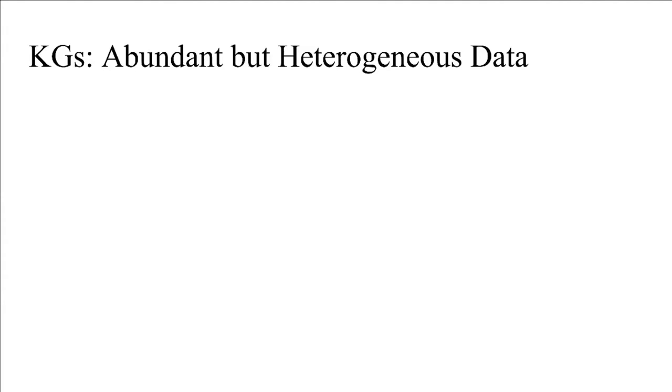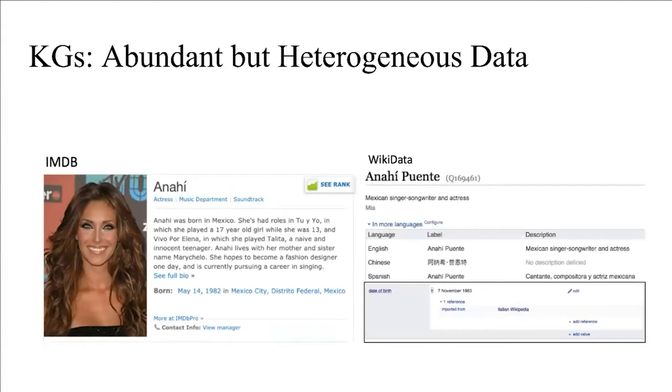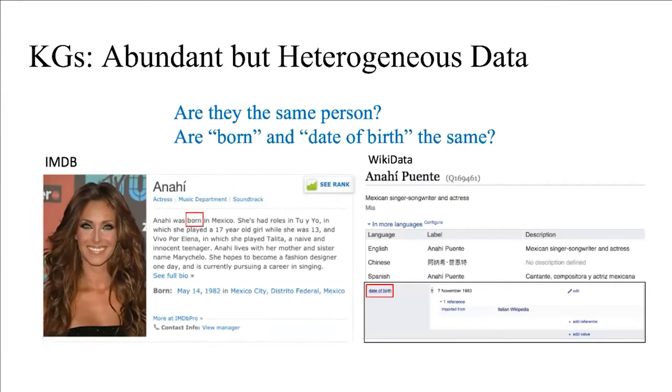Knowledge graphs contain abundant but heterogeneous data. In IMDB, the extract name is Anashi. Are they the same person? Birth date is the same. Yes for humans, but not for machines.